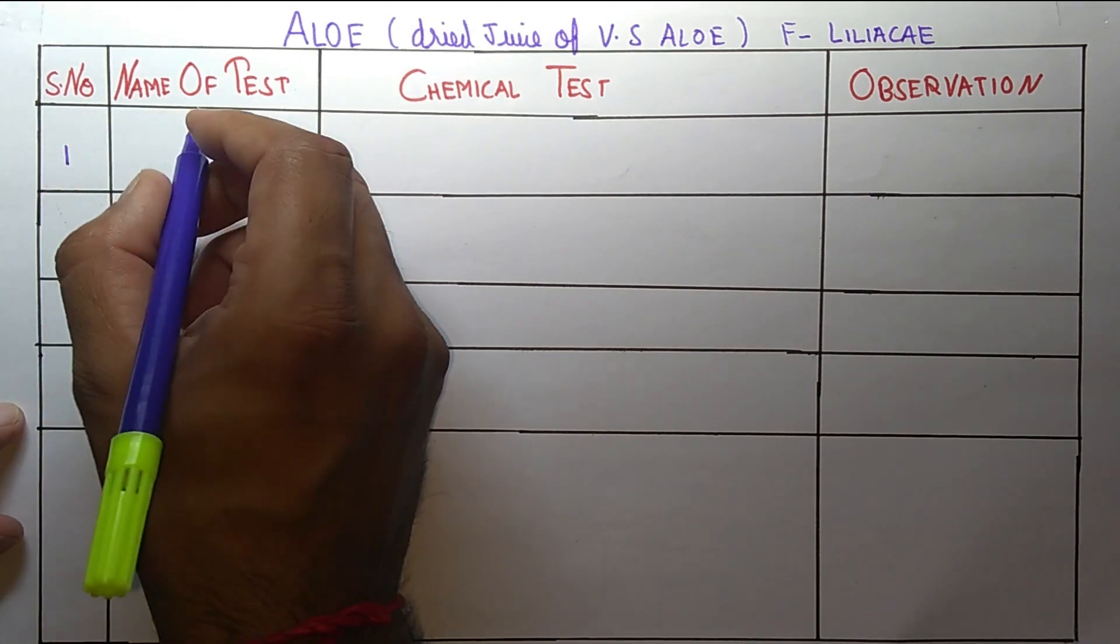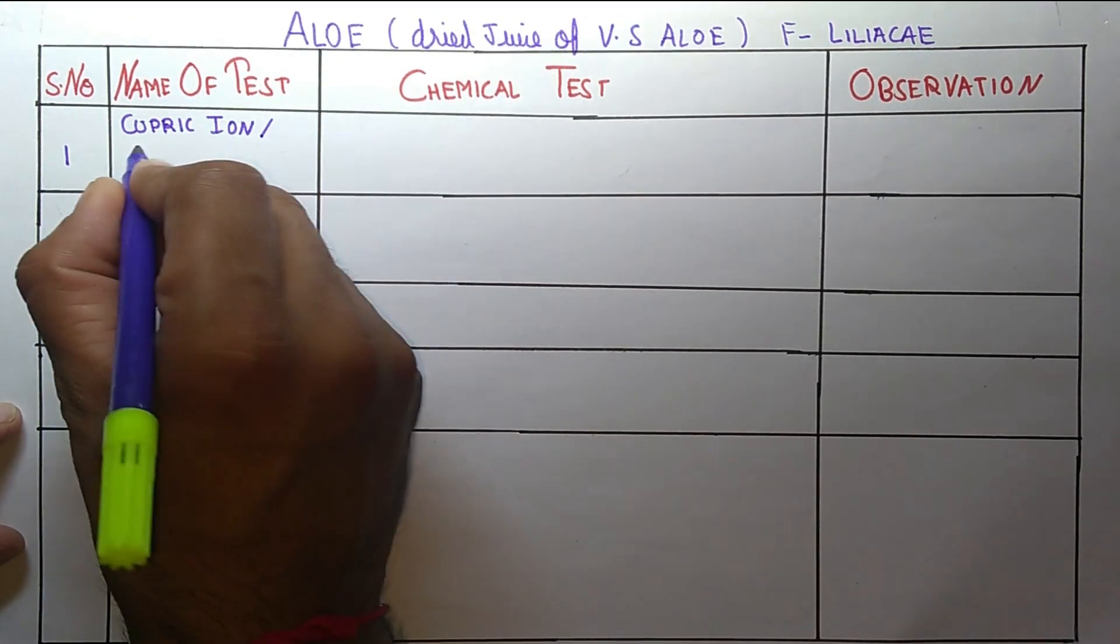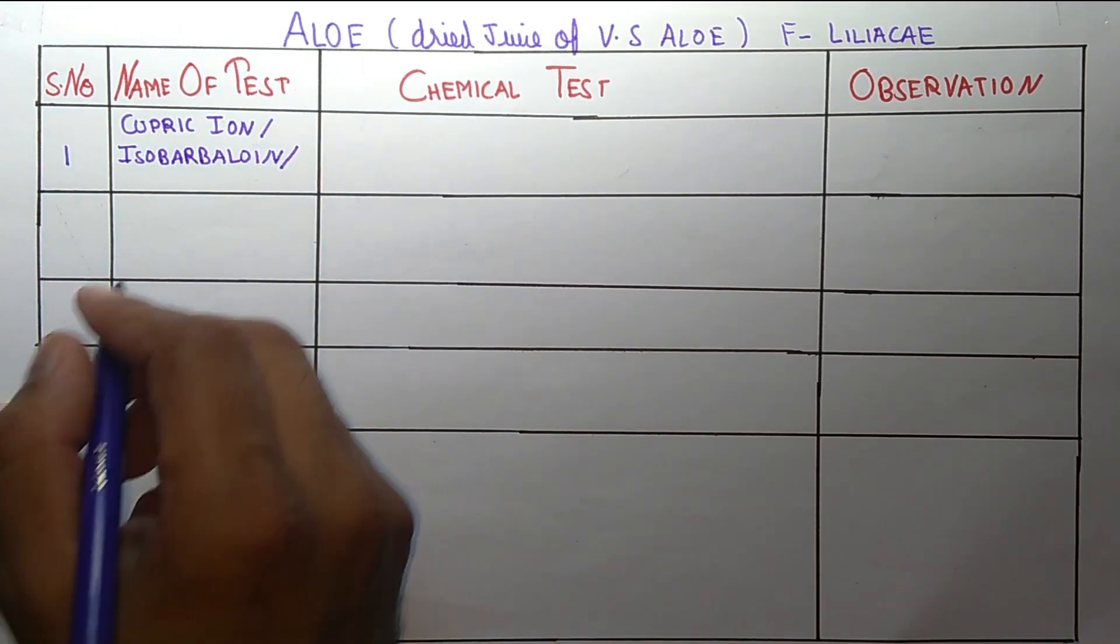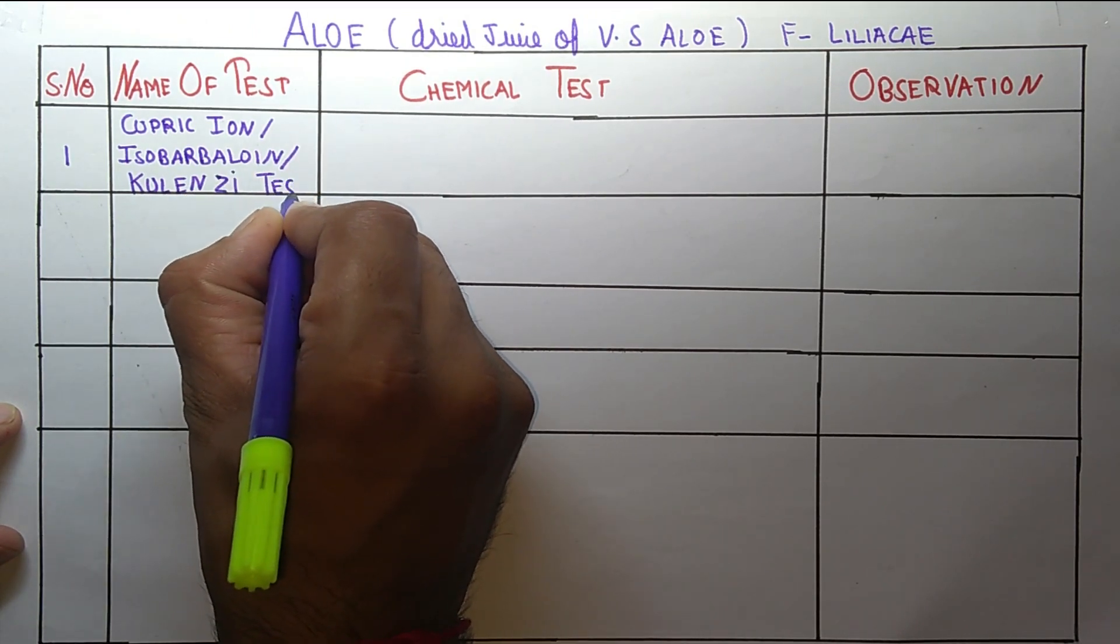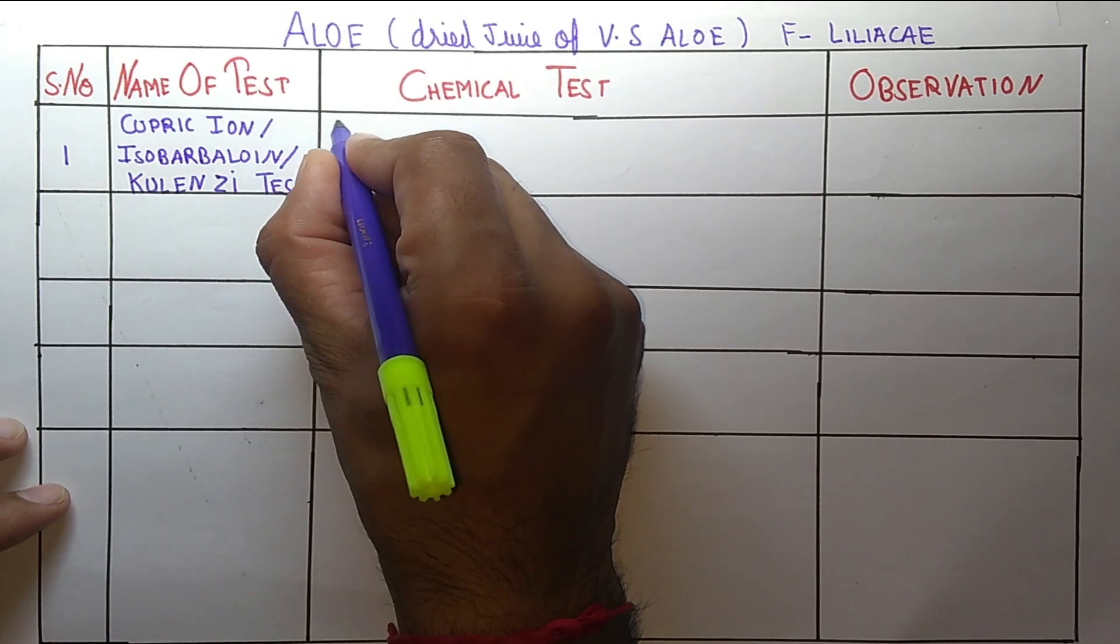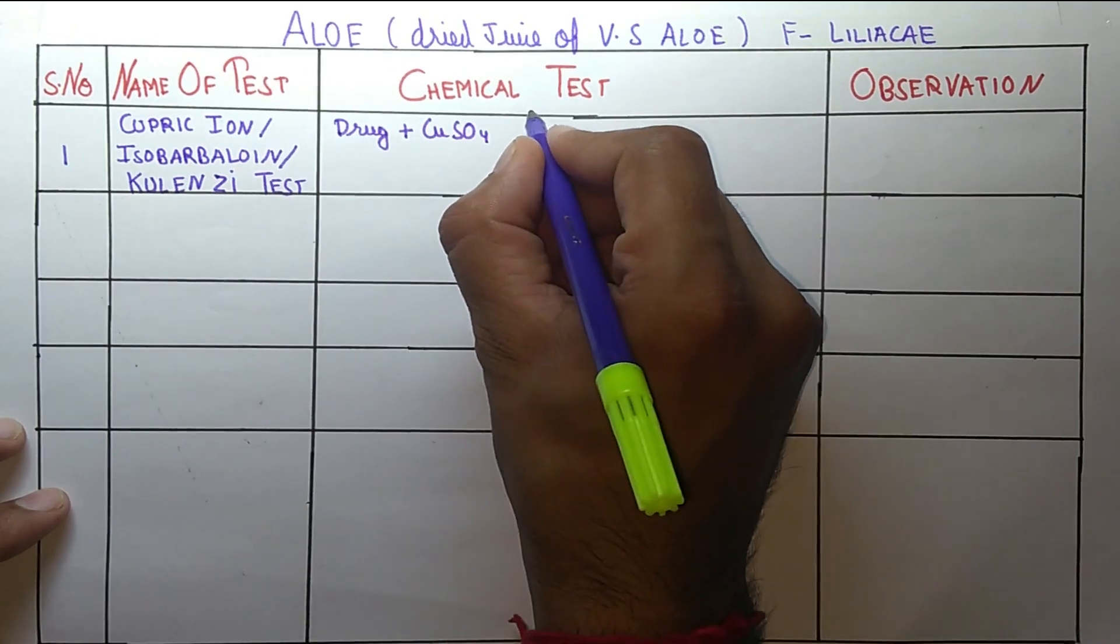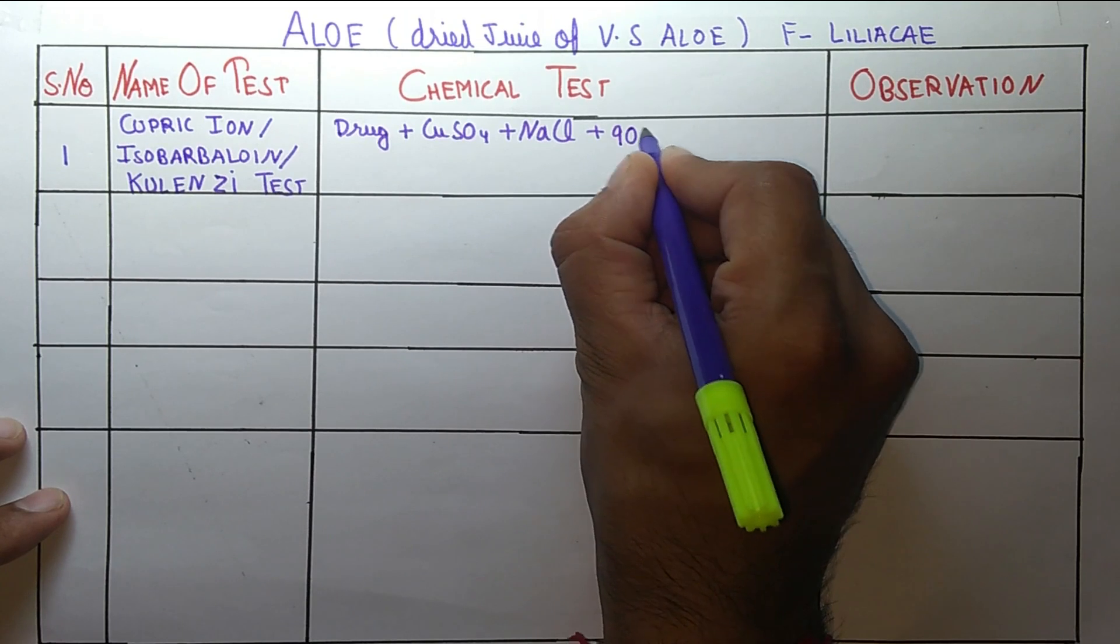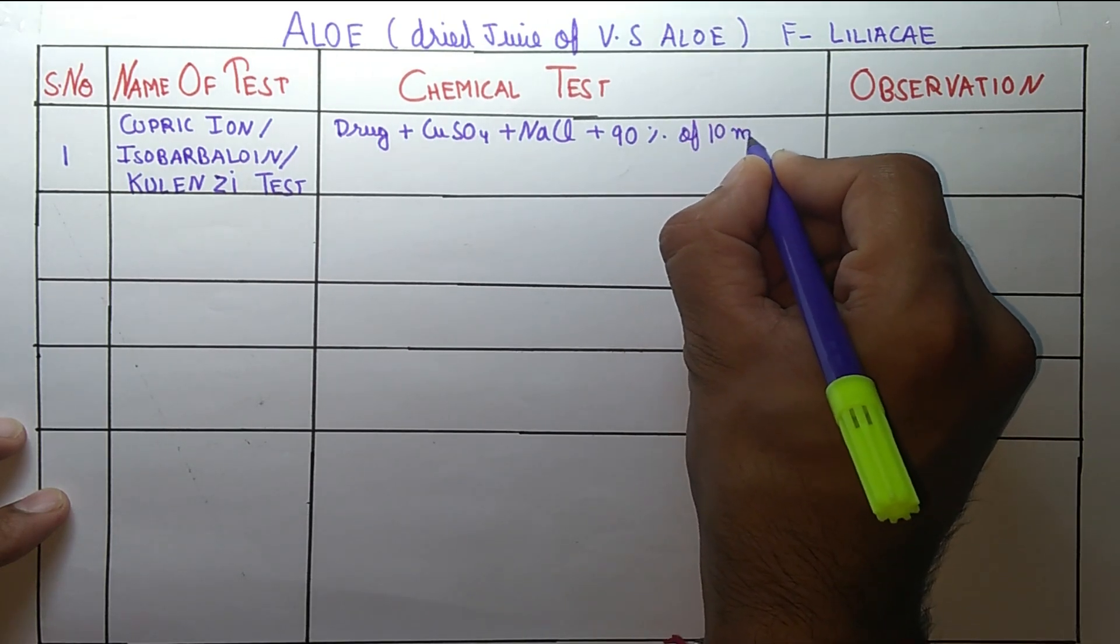First test name is Cupric Ion Test, or it can be named as Isobarbaloin, or it can also be named as Cool NG test. What is the procedure of this test? In this test we take drug plus CuSO4 plus NaCl plus 90% of 10 ml alcohol.